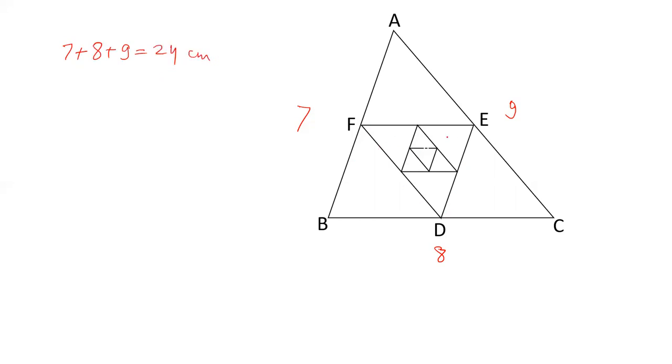If we join midpoints, there is a property that the midpoint of a triangle is half of the front side. So in ABC, BC's length is 8, then FE's length is 8 by 2. DF's value is 9 by 2. DE's value is 7 by 2. This perimeter is 7 by 2, 8 by 2 and 9 by 2. 24 by 2 is 12.